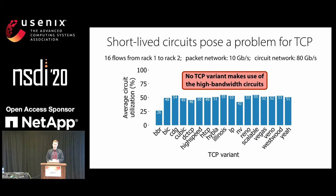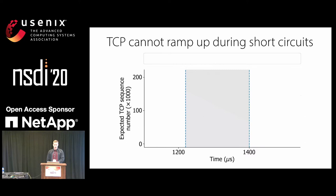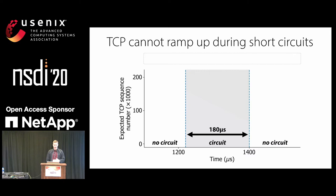To understand what's going on, let's look more closely at TCP's behavior during a circuit. This is a plot over time of the TCP expected sequence number. The gray region in the middle is when a circuit is active. In this experiment, the circuit was up for 180 microseconds, during which the racks can communicate at higher bandwidth.